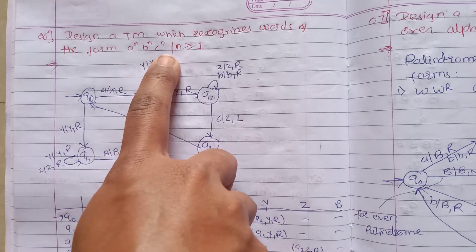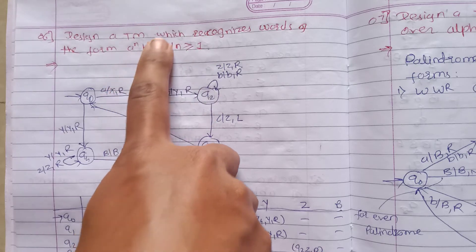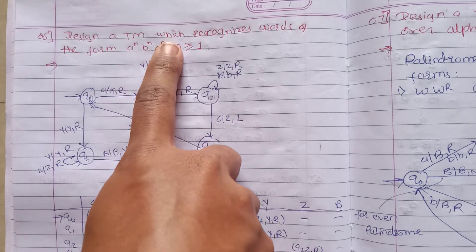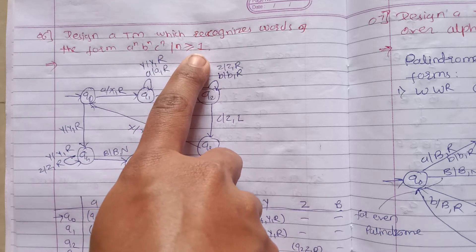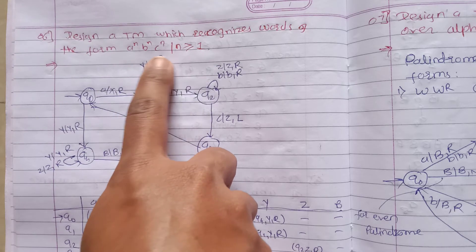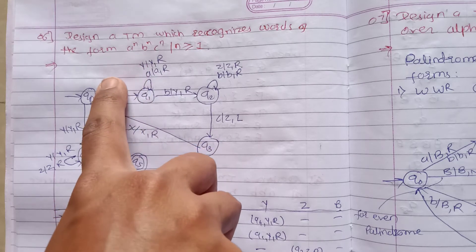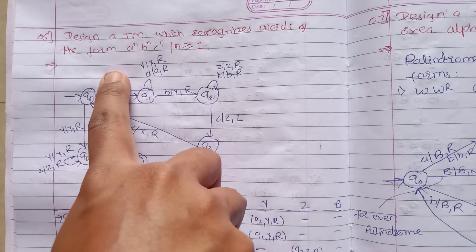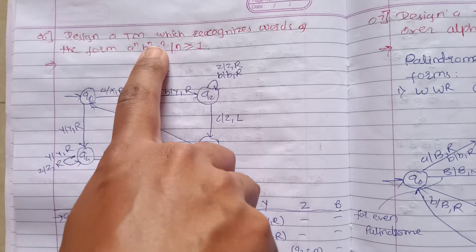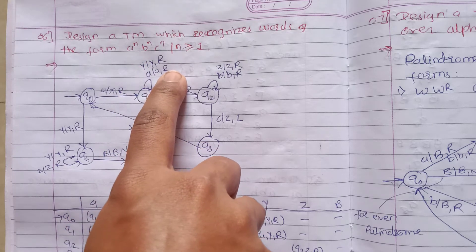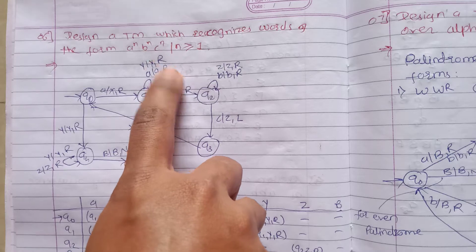Previously we have shown Turing machine design for a raised to power n, b raised to power n, but here we have 3 symbols to match. Now we will follow the procedure: first we will consider converting a to x, b to y, and c to z, so that one by one we can match.